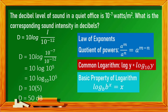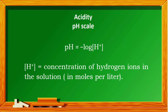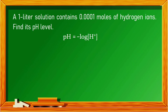Let's proceed to the pH scale, which measures acidity level. The formula for pH level is pH equals negative log of H+, where H+ is the concentration of hydrogen ions in the solution in moles per liter. In our problem, a one-liter solution contains 0.0001 moles of hydrogen ions. Find its pH level.